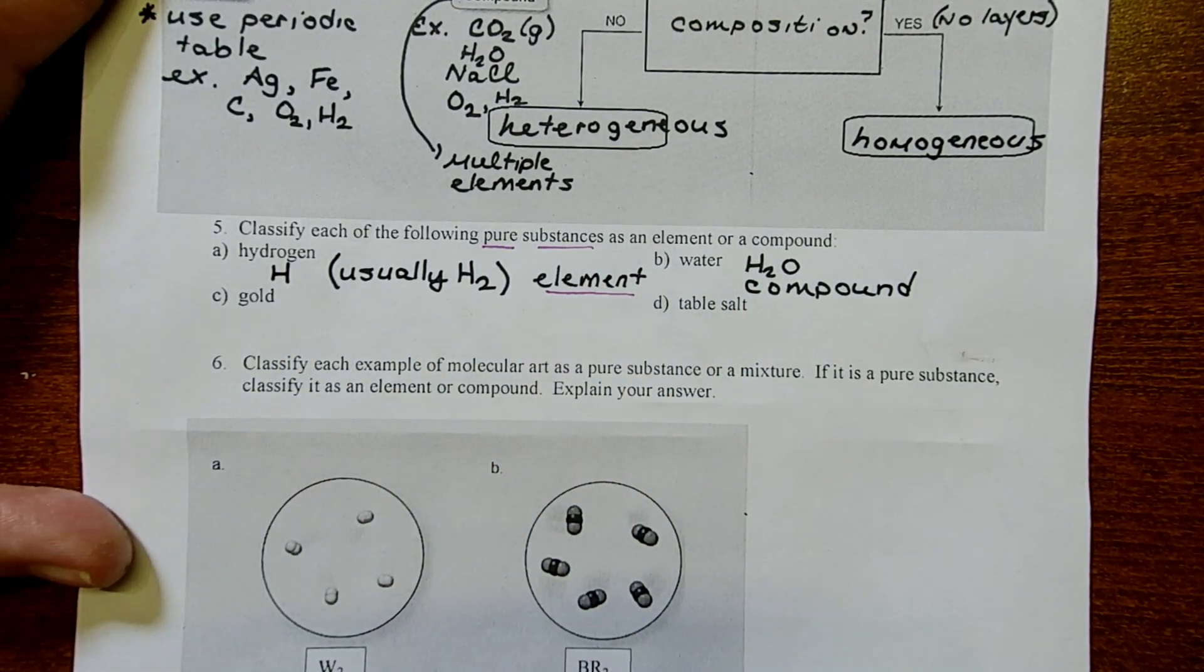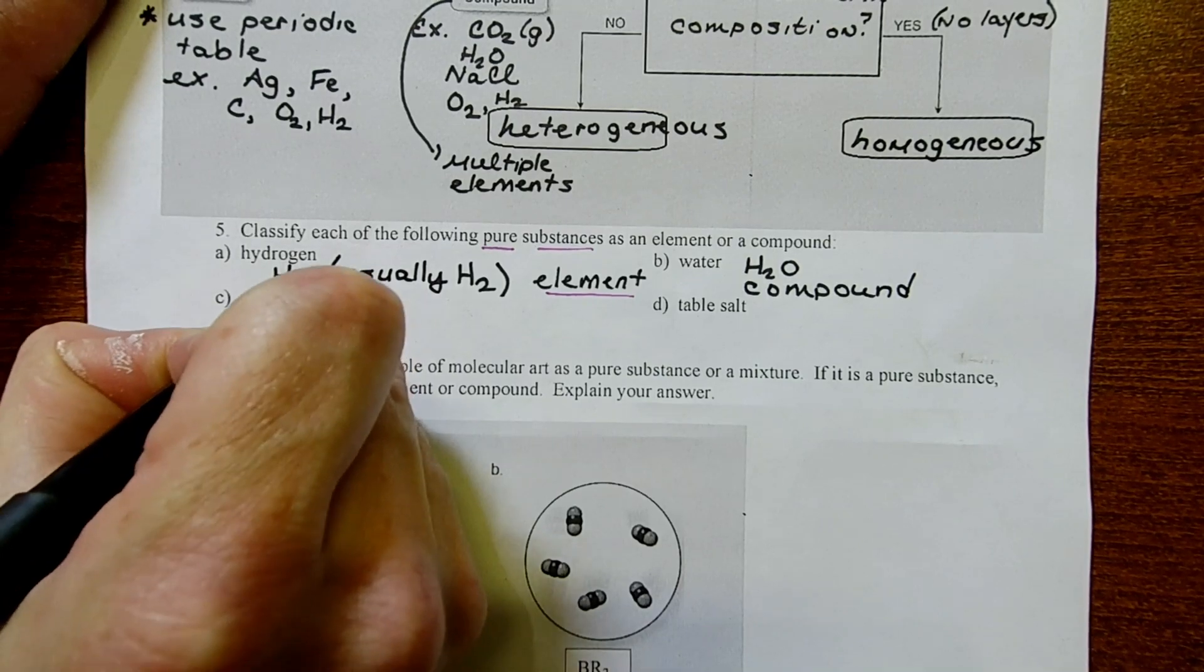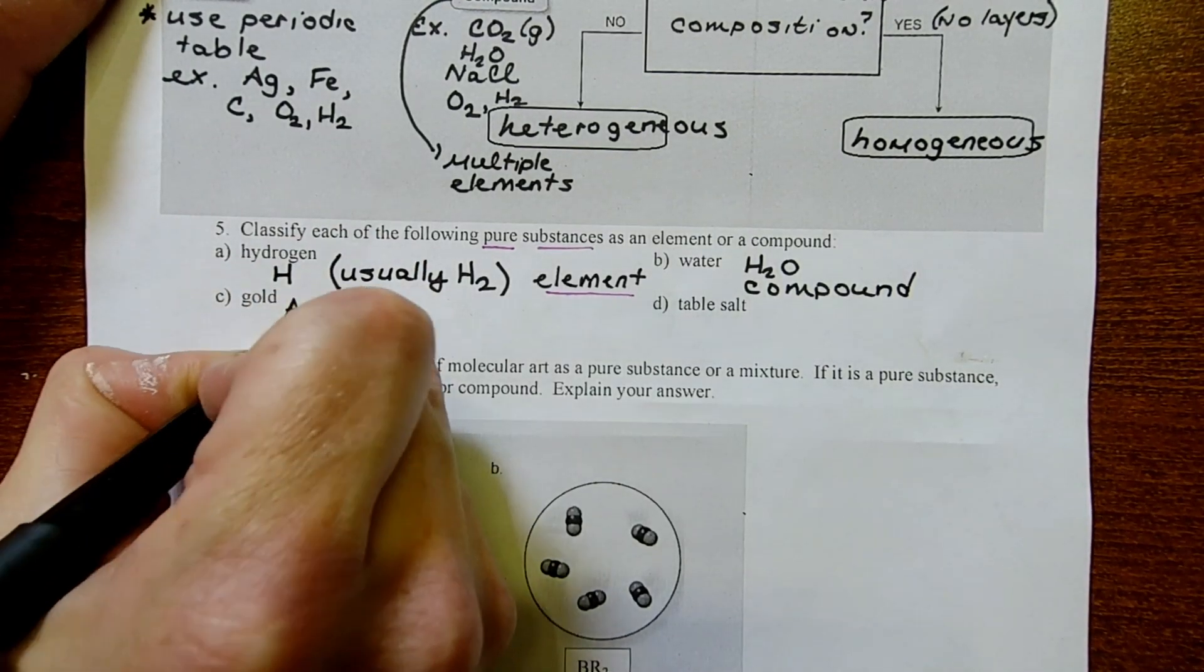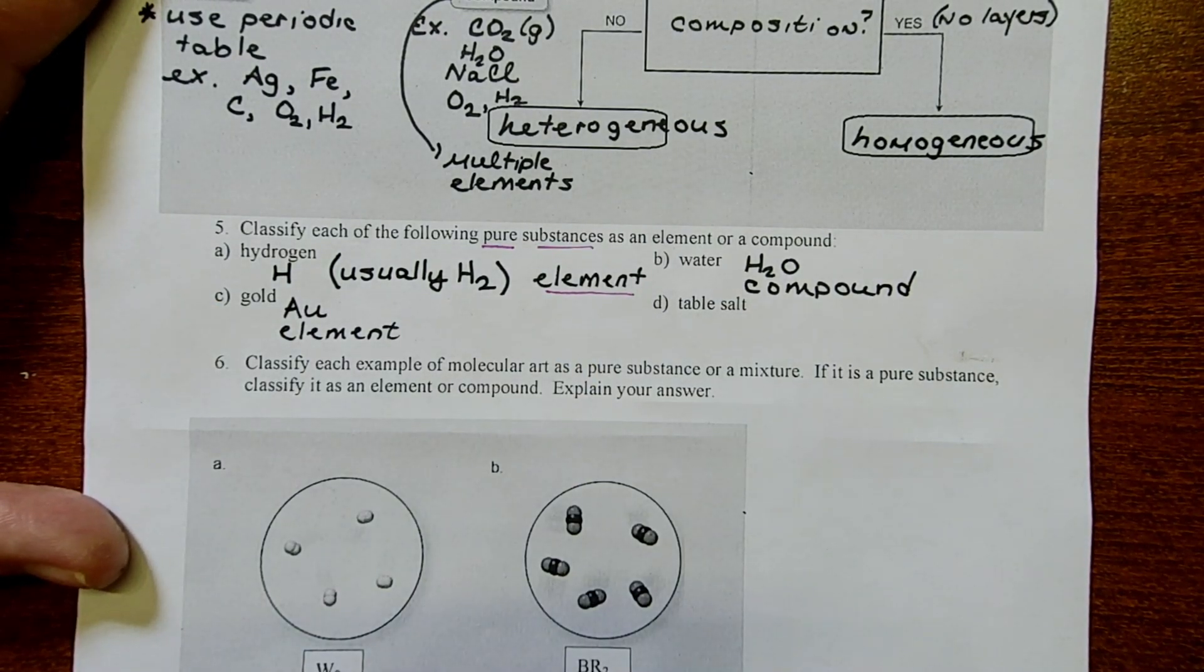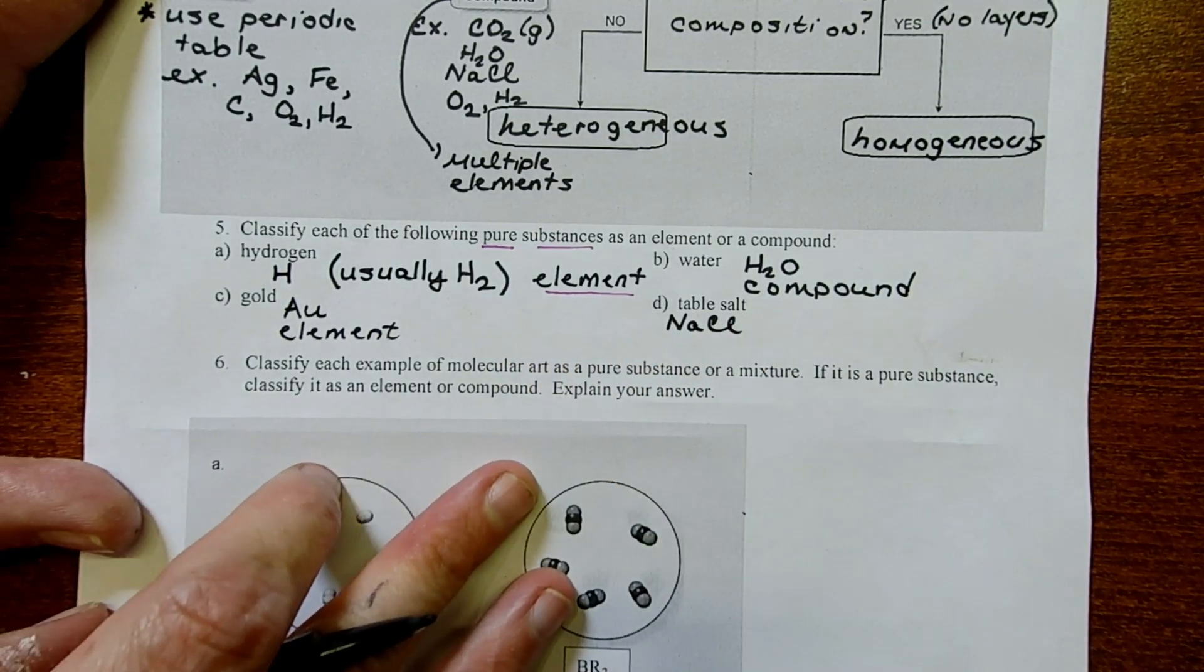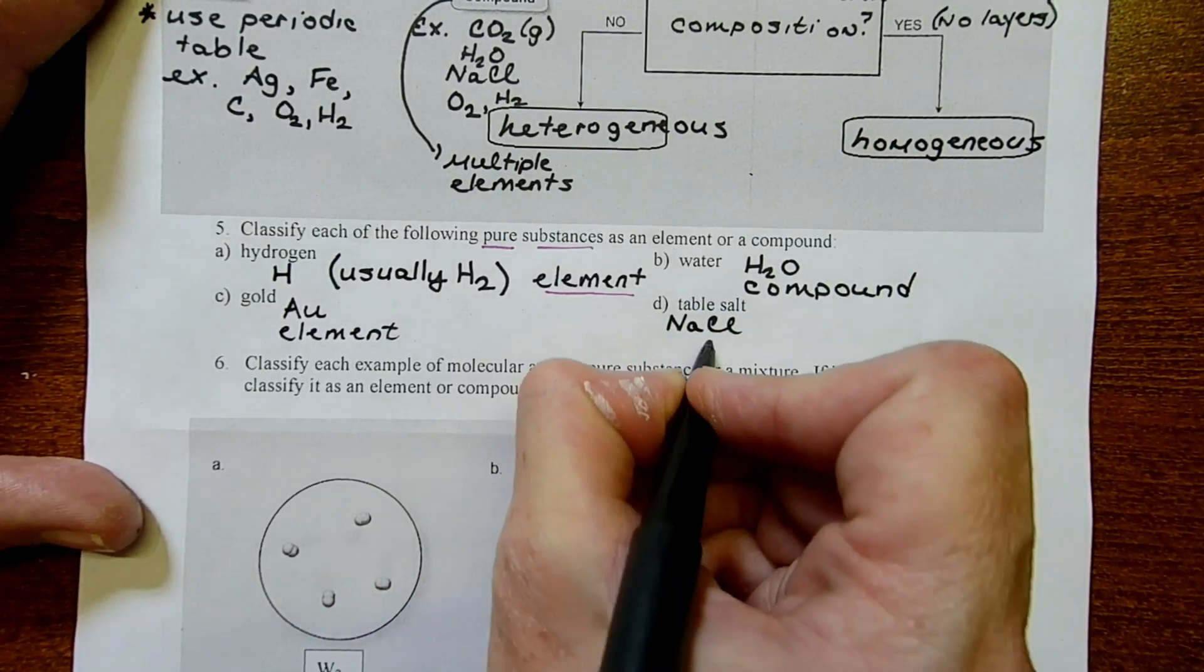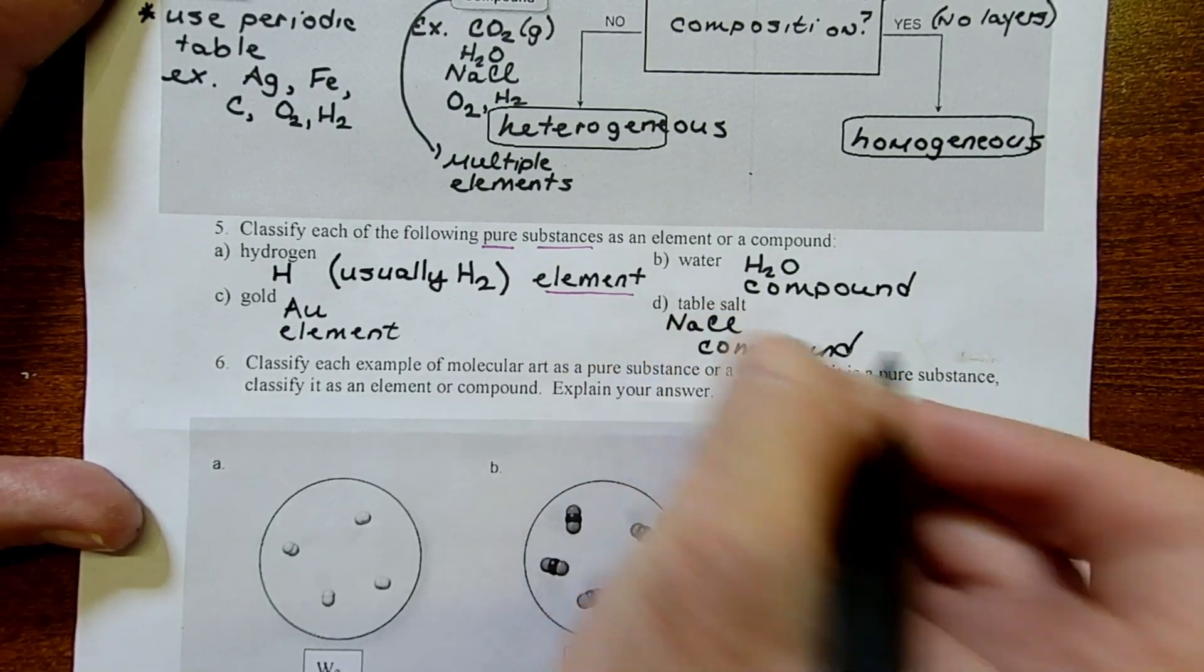Gold. While you're first working out some of these problems, use your periodic table. You're going to find gold on the periodic table. Its symbol is Au. It's a single element, and that makes it easy to classify if we can find it on the periodic table. Next is table salt. Table salt has the formula NaCl. It's also known as sodium chloride. Sodium is one type of element, and chloride is another type of element. We're going to classify this as a compound since it contains two different elements.